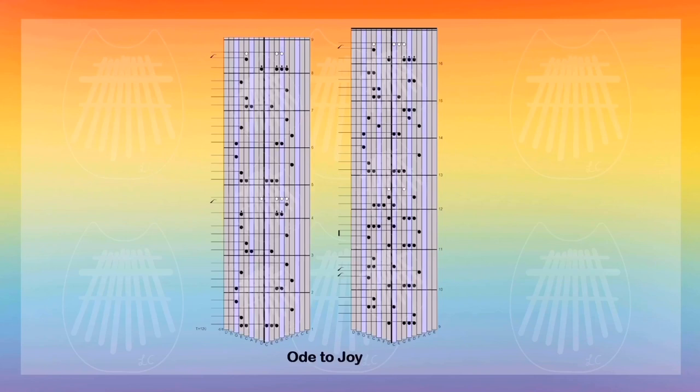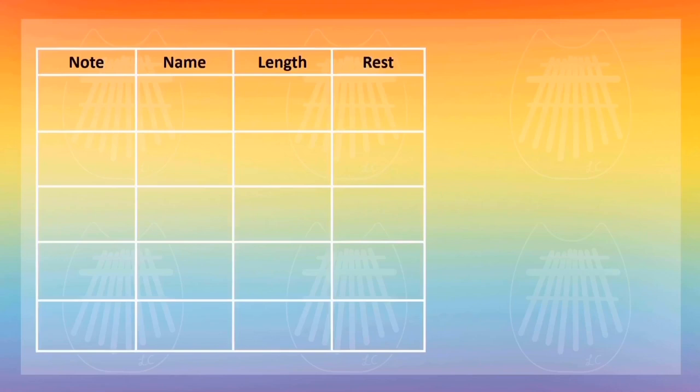For kalimba tabs, you would read it from bottom to top. You can see there are numbers on the right side that say 1, 2, 3, 4, 5, 6, 7, 8, 9. That's the order you would read the kalimba tabs.